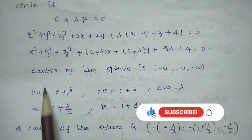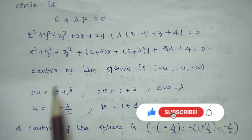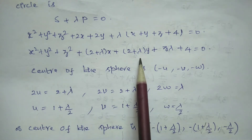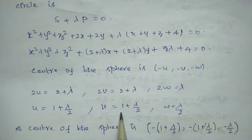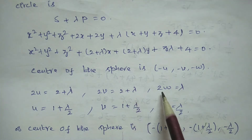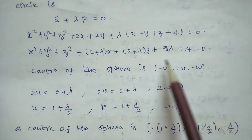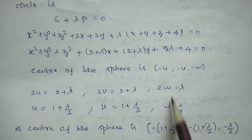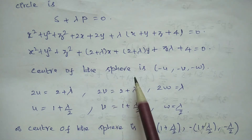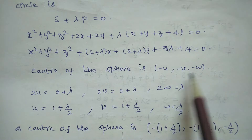Comparing with the general sphere equation: 2u = 2 + λ, so u = (1 + λ)/2. For y: 2v = 2 + λ, so v = (1 + λ)/2. For the z coefficient: 2w = λ, so w = λ/2. The center is given by (−u, −v, −w), which gives us (−(1+λ)/2, −(1+λ)/2, −λ/2).